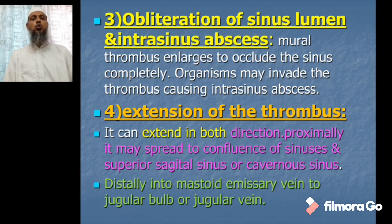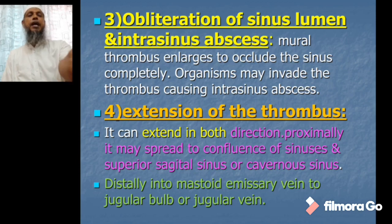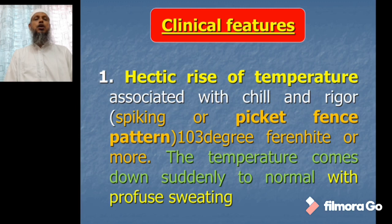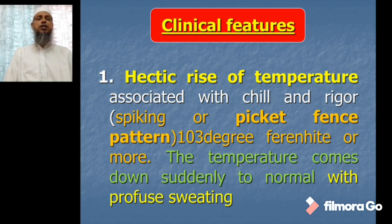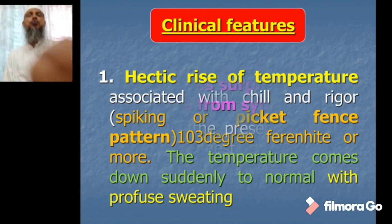The clinical features: first of all, a hectic rise of temperature associated with chills and rigors, which is called the spiking or picket fence pattern of fever, usually 103°F or more. The character of the fever is that the temperature comes down suddenly to normal with profuse sweating, but the pulse rate remains fast.